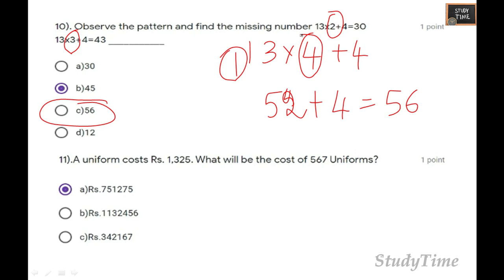A uniform costs rupees 1325. What will be the cost of 567 uniforms? What you have to do is 1325 multiplied with 567. Pause the video, multiply it, and choose the answer.